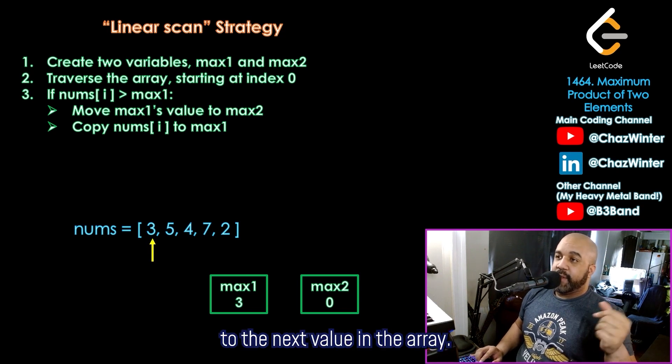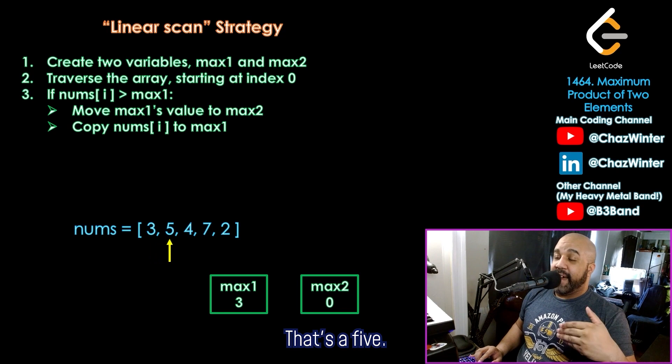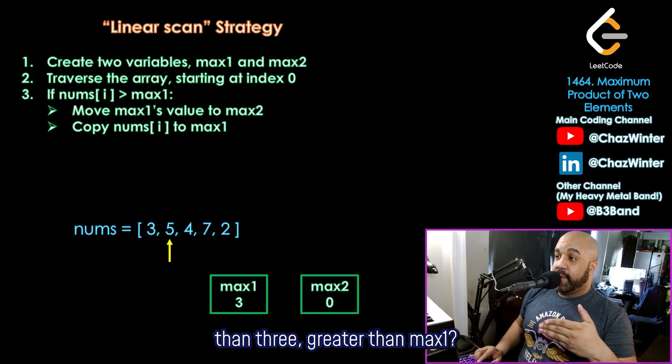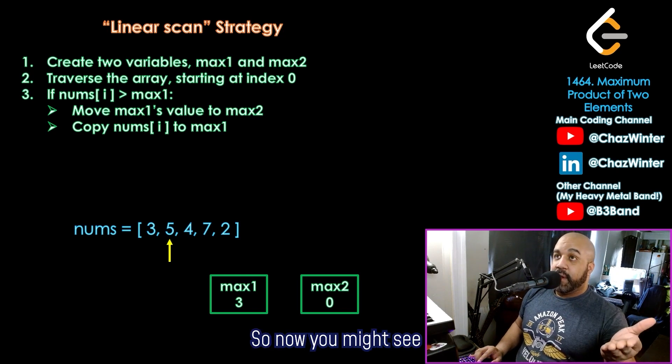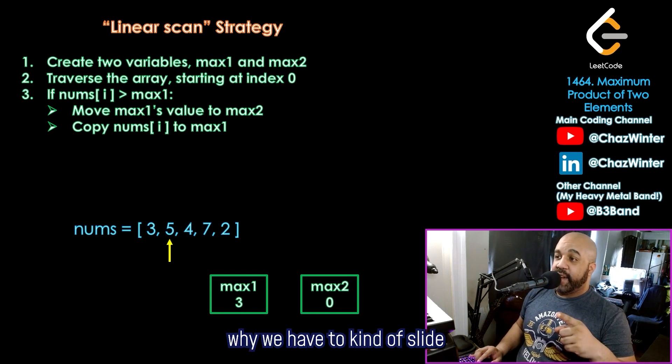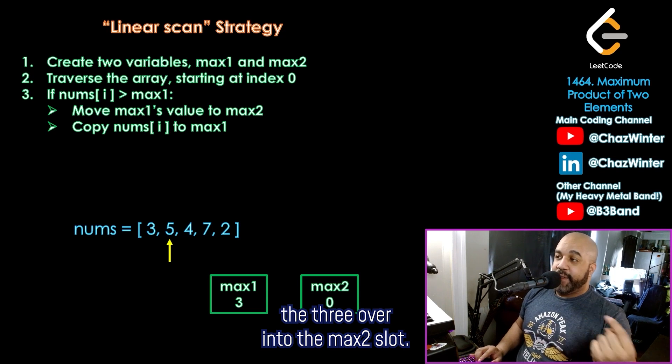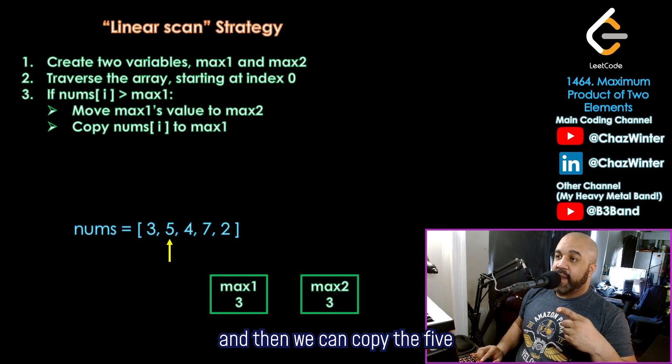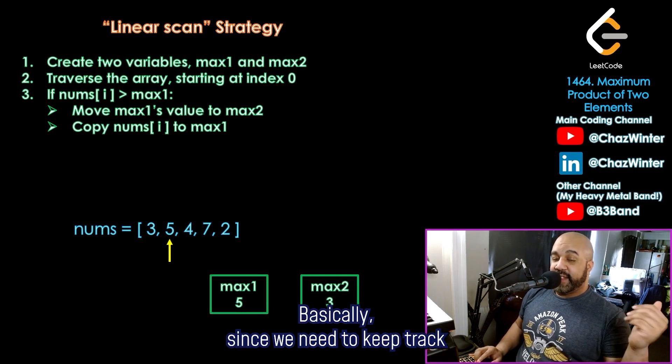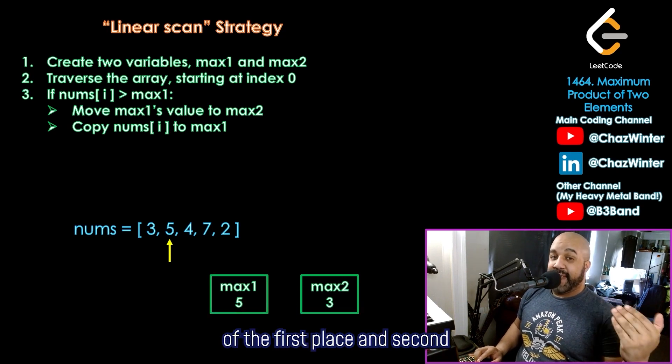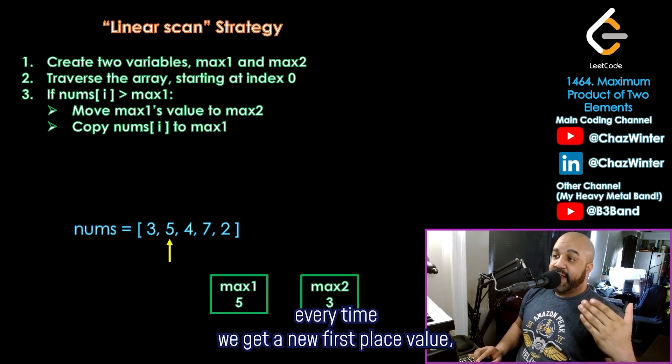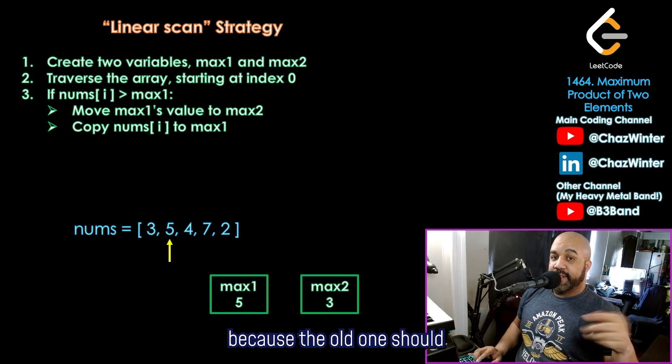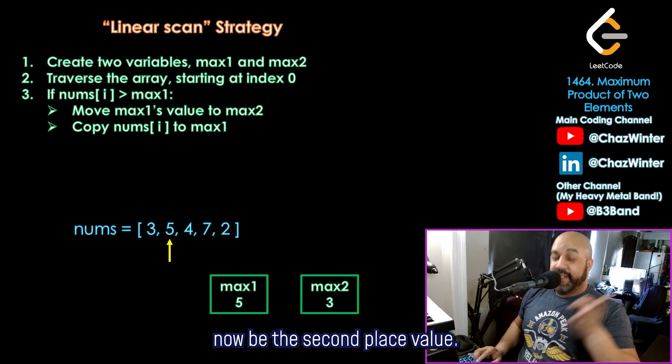So now let's just move over to the next value in the array, that's a five. And then we ask the same question, is five greater than three, greater than max one, and it is. So now you might see why we have to kind of slide the three over into the max two slot. So slide that three into max two, and then we can copy the five in the max one. Basically, since we need to keep track of the first place and second place values, every time we get a new first place value, we have to remember what the old one was, because the old one should now be the second place value.